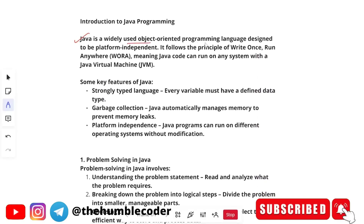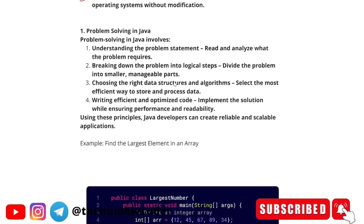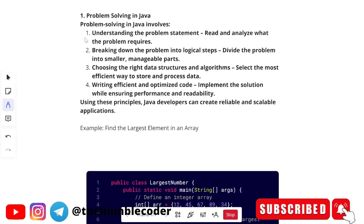Let's start with an introduction to Java programming. Java is a widely used object-oriented programming language designed to be platform-independent. It follows the principle of Write Once Run Anywhere, also called WORA, meaning Java can run on any system with the Java Virtual Machine (JVM). Key features include: strongly typed language — every variable must be defined with a data type — garbage collection where Java automatically manages memory to prevent memory leaks, and platform independence.